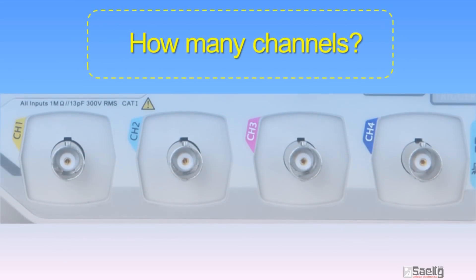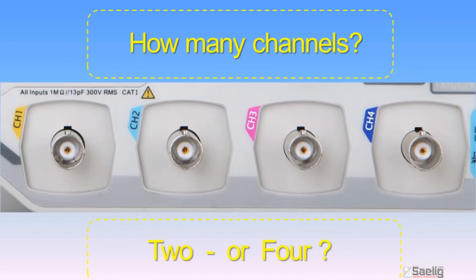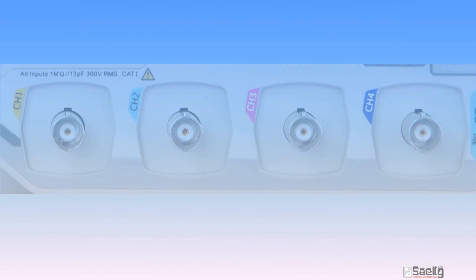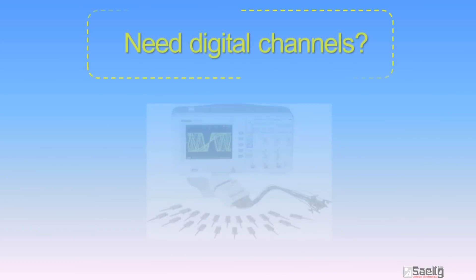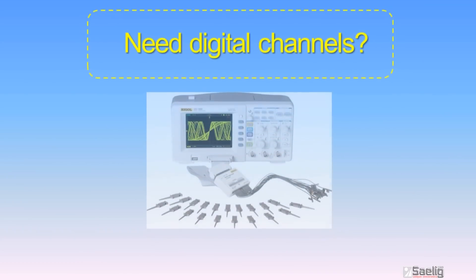First of all, how many signals do you need to measure at once? Two or four? Maybe you need eight or sixteen digital channels too for system debug, for finding system problems.